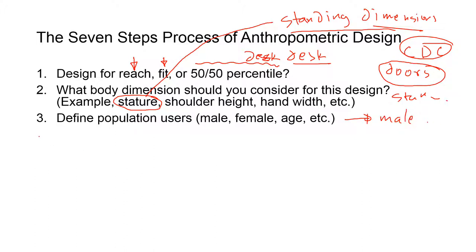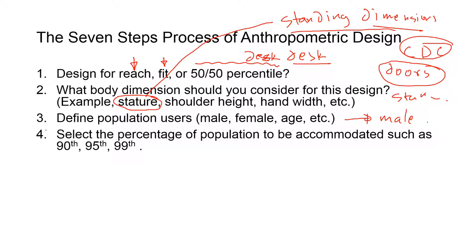The next thing is you try to make sure which percentile you're going to fit. Is it 99th percentile? Typically if it's not a safety issue, you stay with either for fitting 95th percentile or reaching 5th percentile. So fit typically 95th percentile, and reach typically 5th percentile - the smallest person. If it's a safety issue where somebody can hit their head on the door height and get injured, then you always go for 99th percentile. You cannot have 100th percentile.